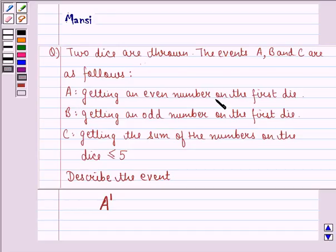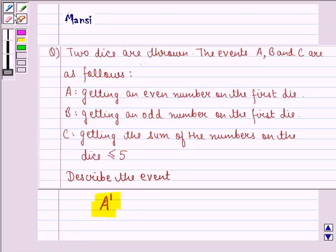A is getting an even number on the first die. Event B is getting an odd number on the first die. And event C is getting the sum of the numbers on the dice less than or equal to 5. Describe the event A', that is the complement of A.